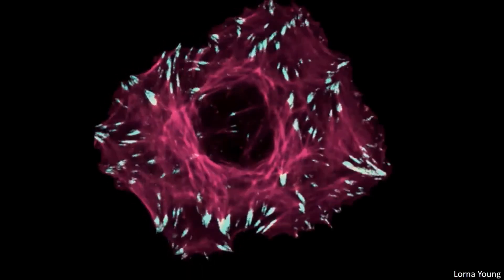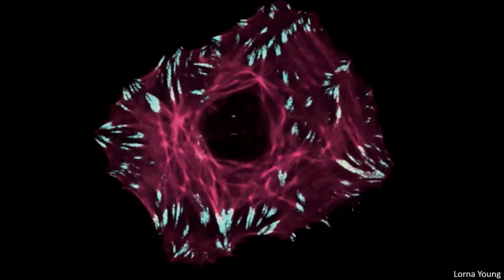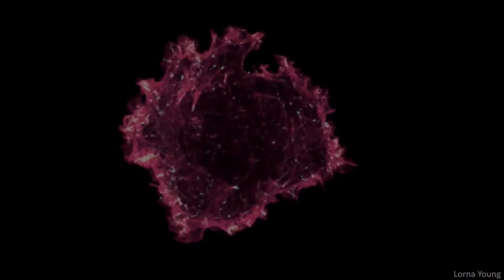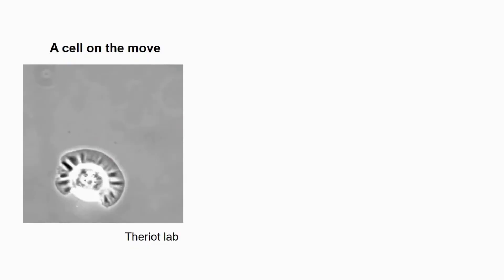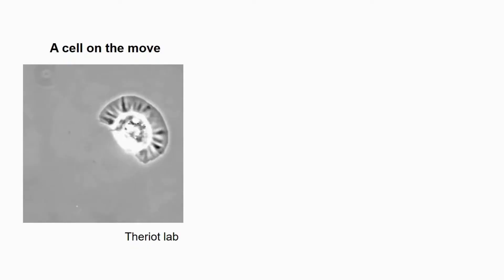Cytoskeleton is the skeleton of living cells. A key component of cytoskeleton is a protein called actin. Actin monomers come together to form actin filaments. These filaments can then apply force and help cells move forward.